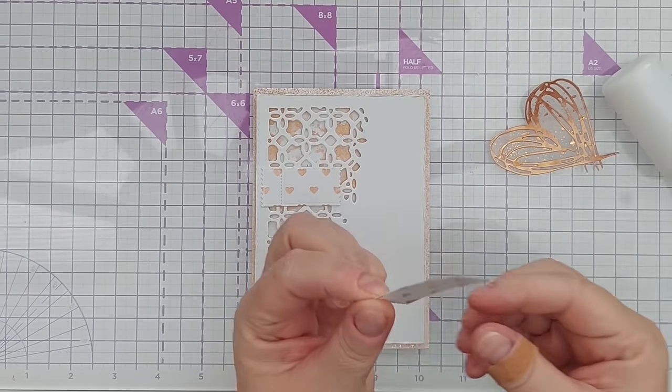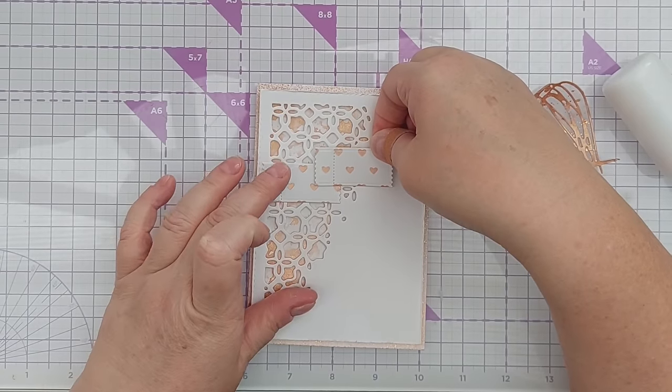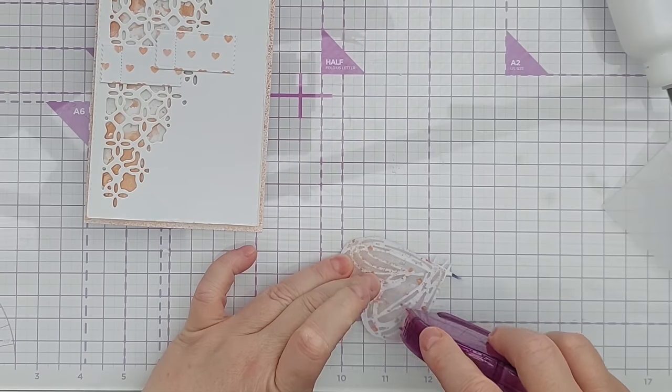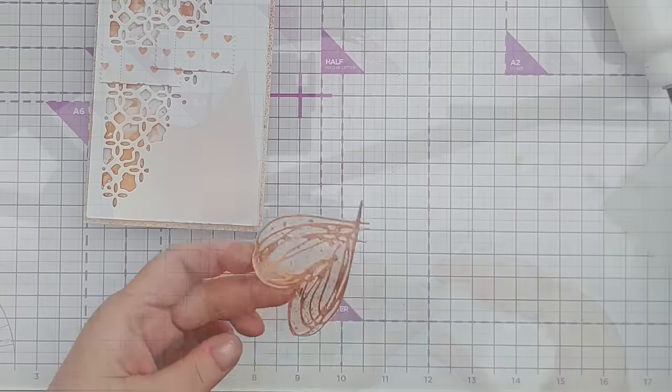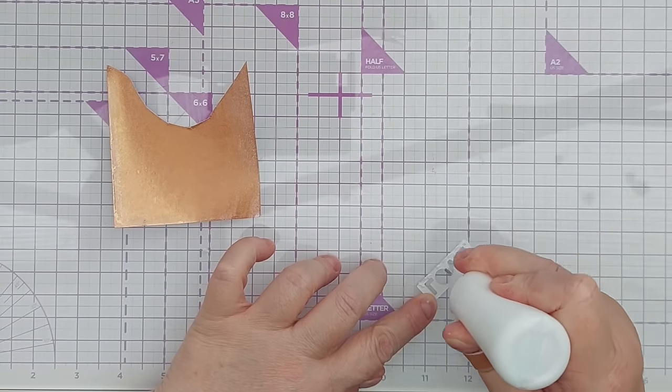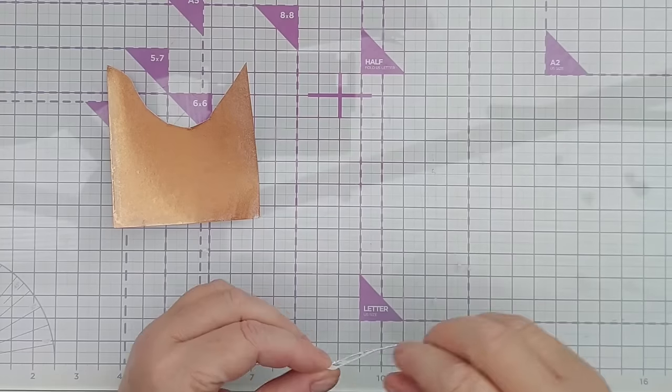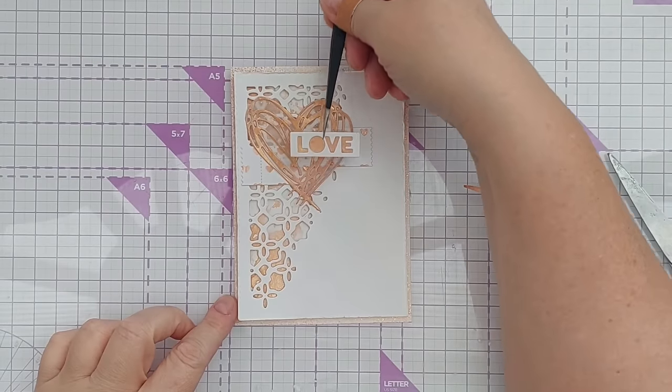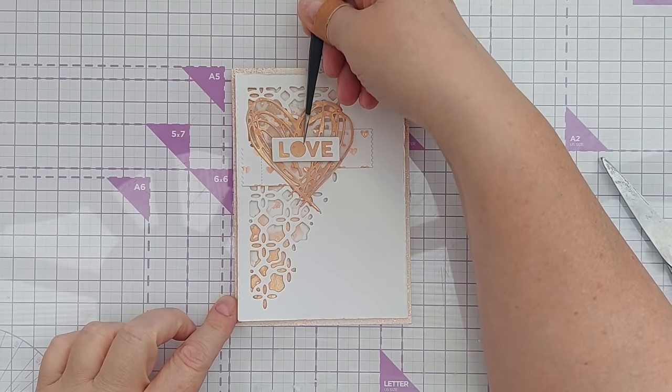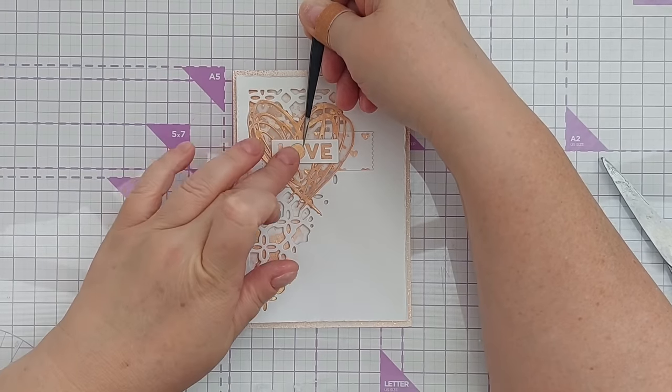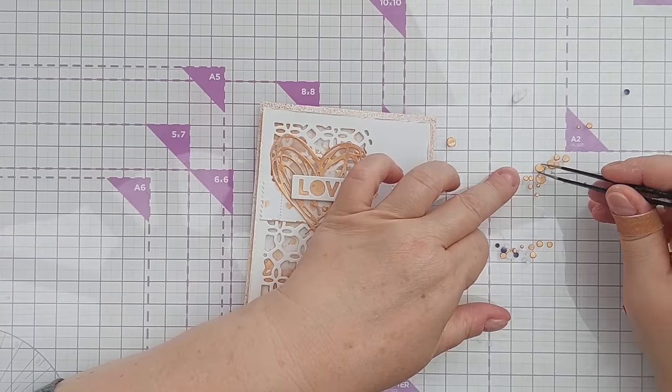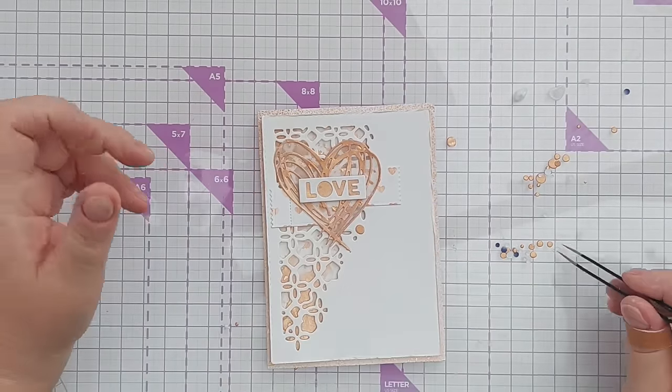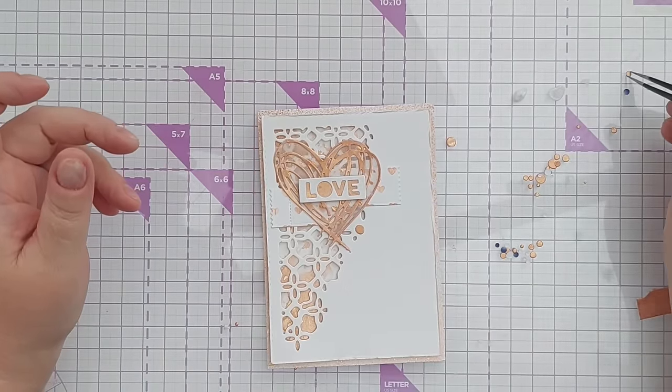For a sentiment I wanted to add the word 'love' because we've got a heart and I'm nothing if not consistent in using the word love with heart dies. So I die cut the word love, stuck that on a spare bit of that DIY shimmer paper, cut it out with my scissors and then popped it over the heart. I then took the rest of that DIY shimmer paper, ran it through my die cutting machine with a wobbly circle die, and then stuck a few of those wobbly circles around the heart just for a little bit of something extra. And that's this card finished.